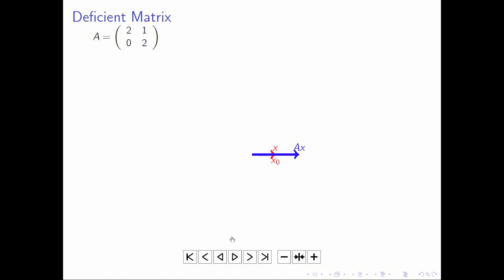So let's see if we can visualize a deficient matrix, a matrix that cannot be diagonalized. Well, here we go. Notice that when X points in the direction of the vector 1, 0, the first unit basis vector, A times X points in the same direction as X. So that is an eigenvector.